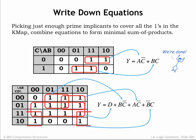Finding prime implicants in a K-map is faster and less error-prone than fooling around with Boolean algebra identities.